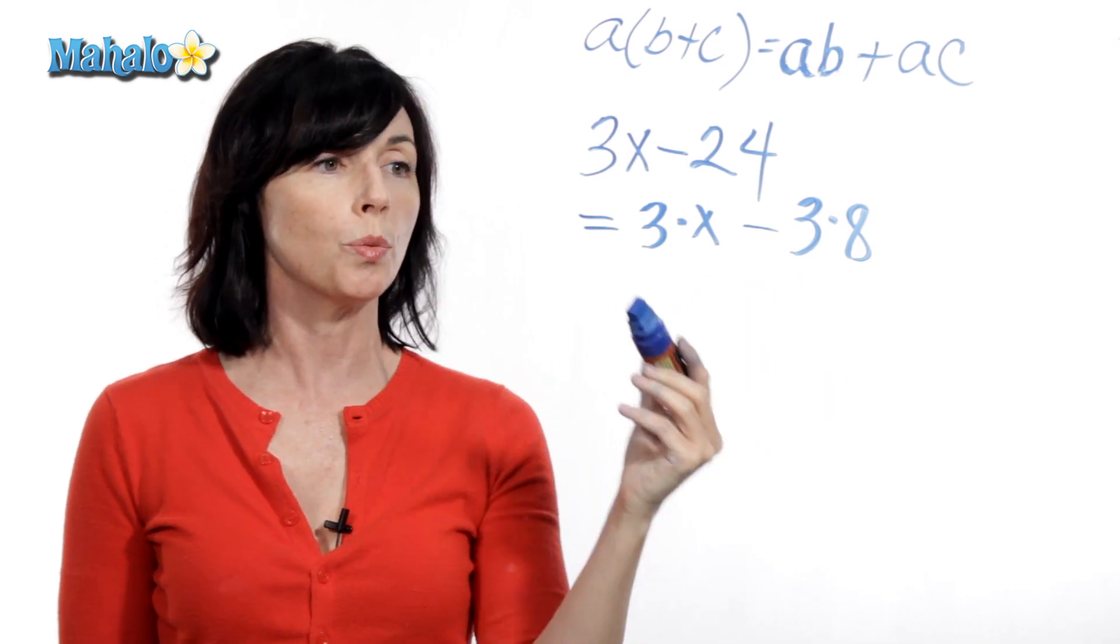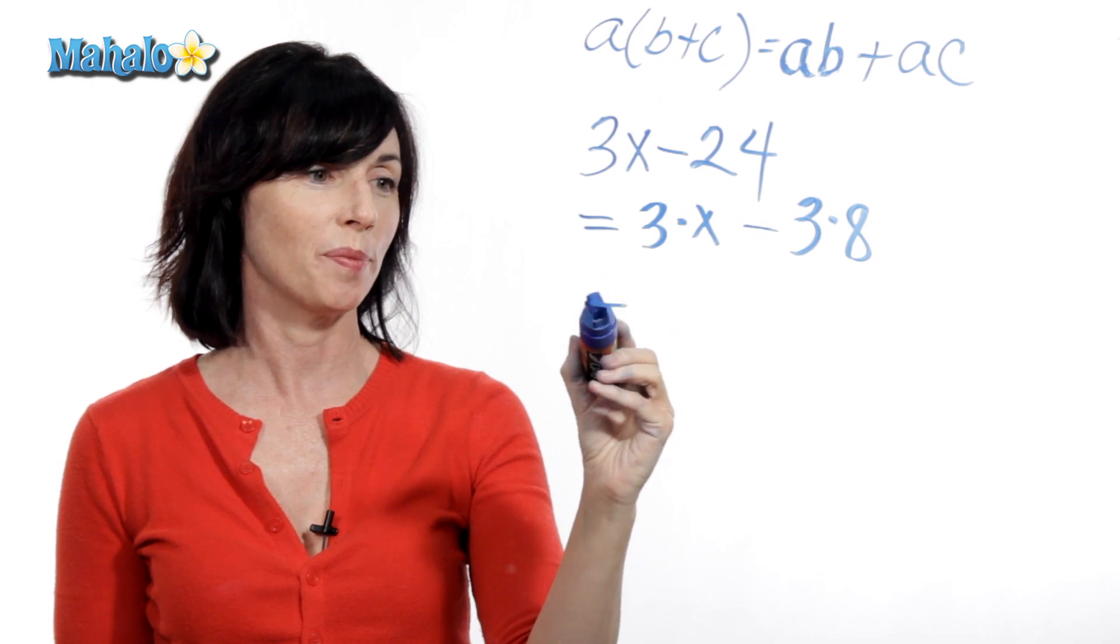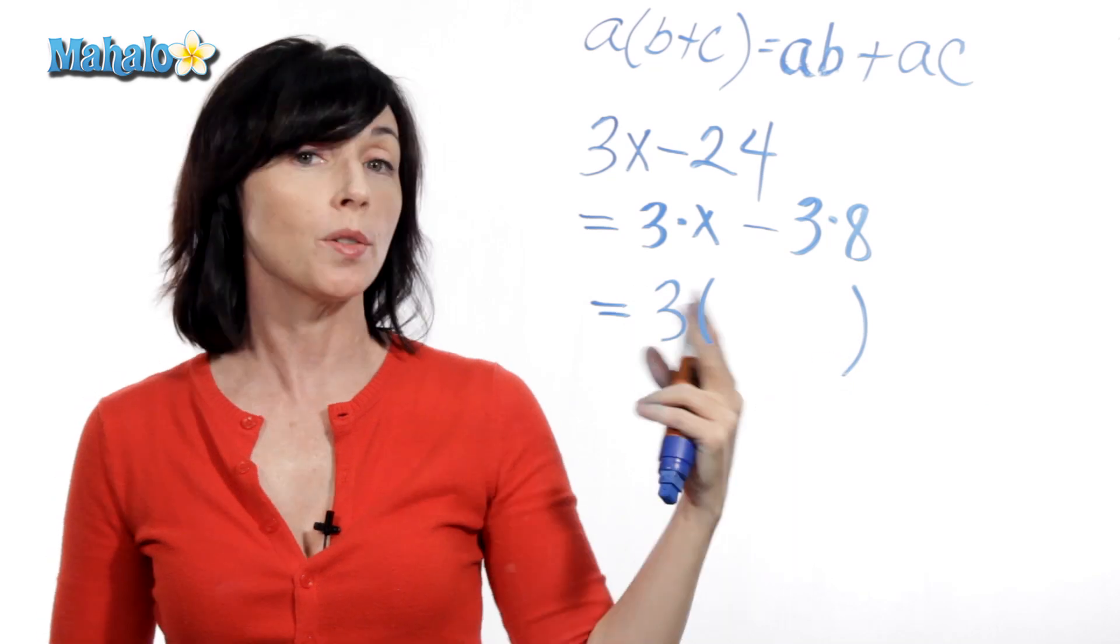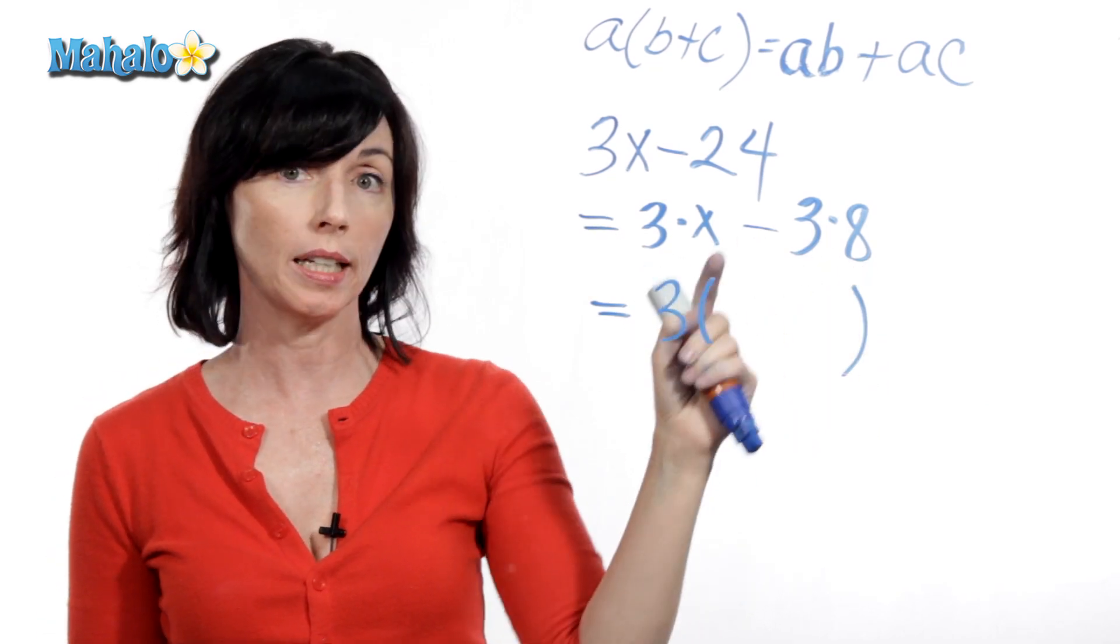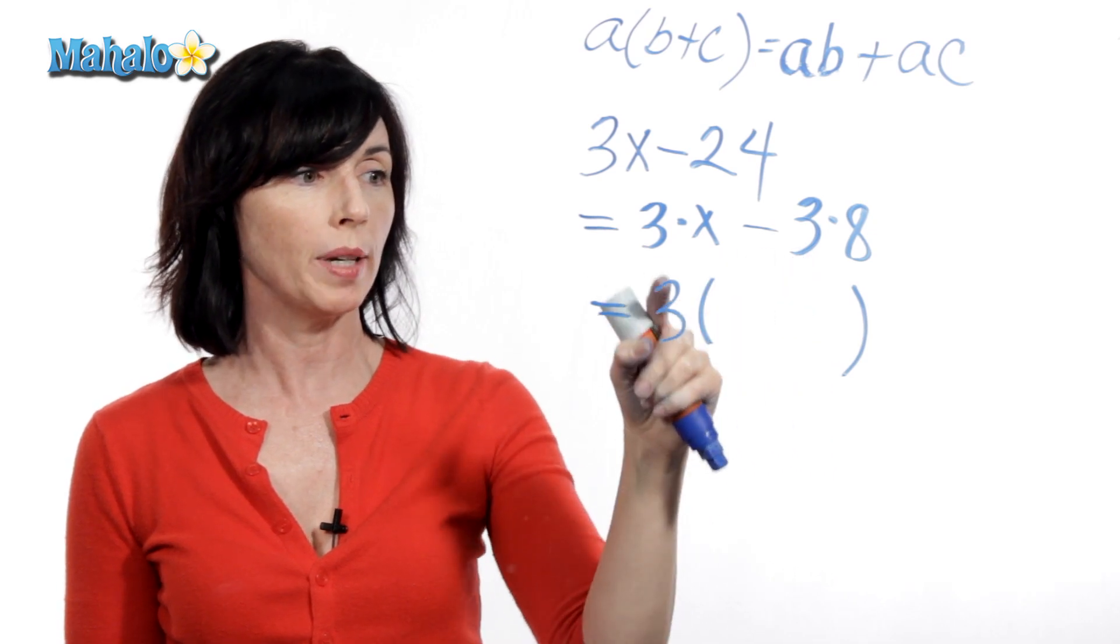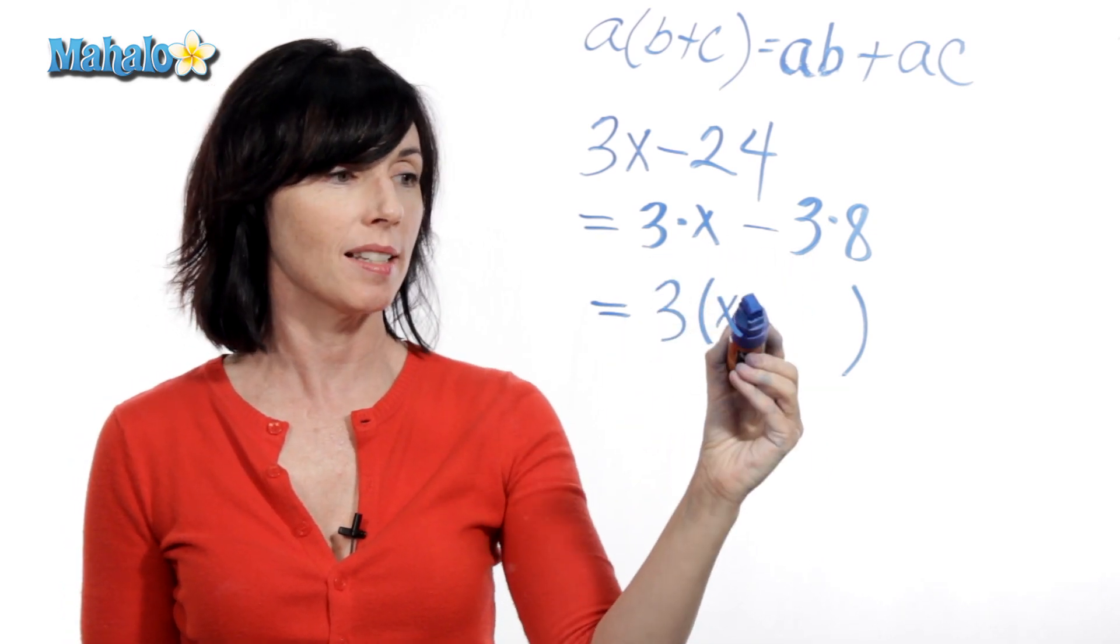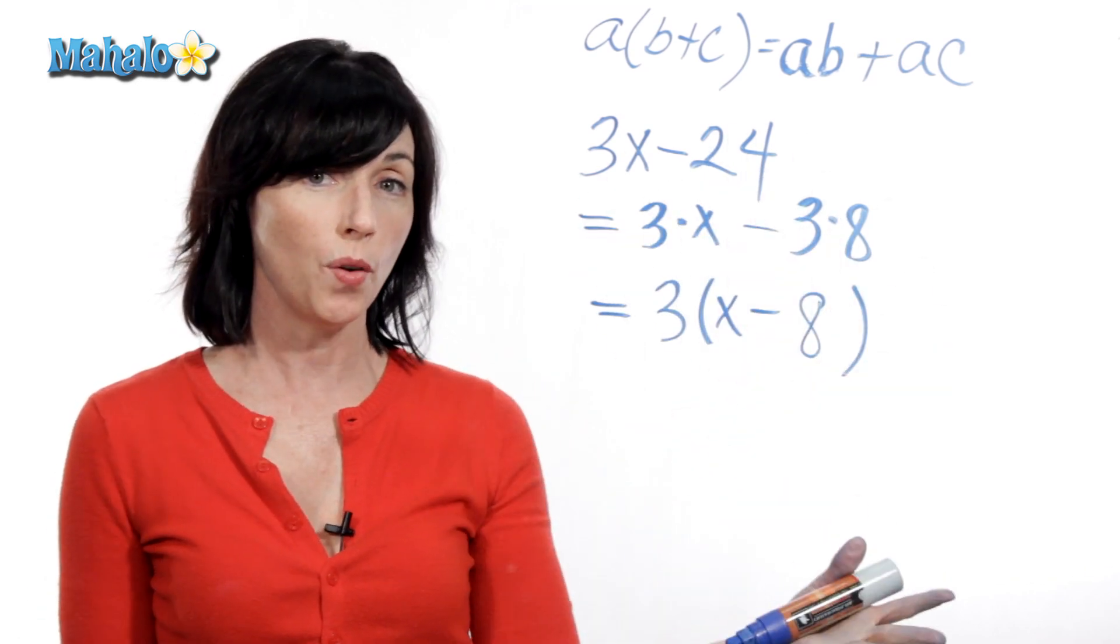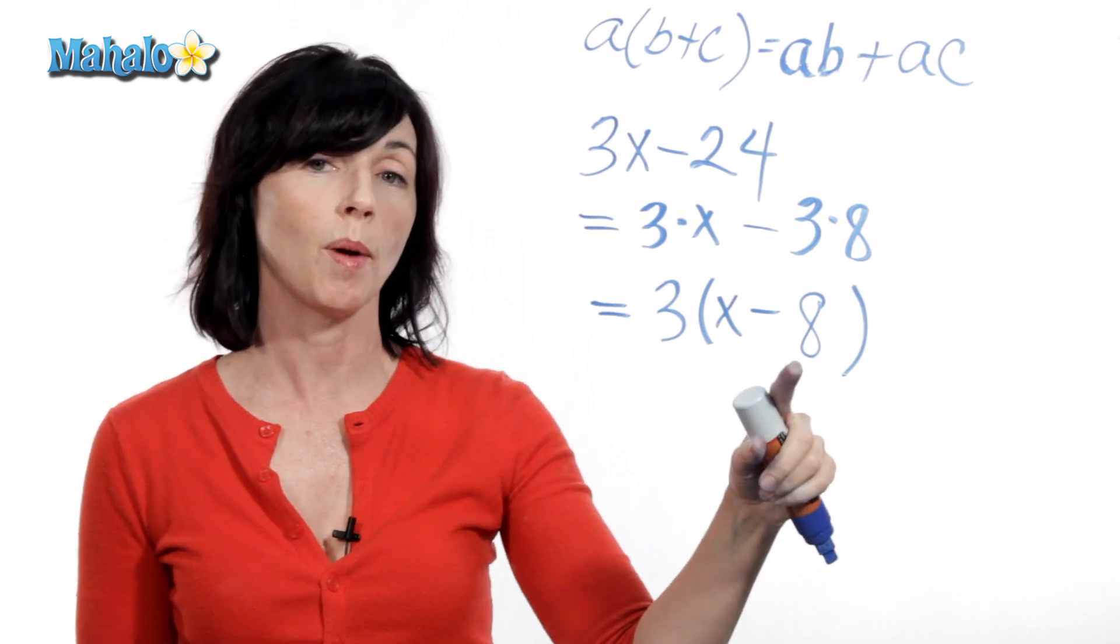So I'm going to rewrite this like this, going this direction with the distributive property. I'm going to write the 3 on the outside, and then I'm going to write my parentheses. What goes inside the parentheses is whatever you have left over here, and you're going to keep your sign. So I took the 3 outside. That leaves me an x minus 8. So 3x minus 24 is equal to 3 times the quantity x minus 8.